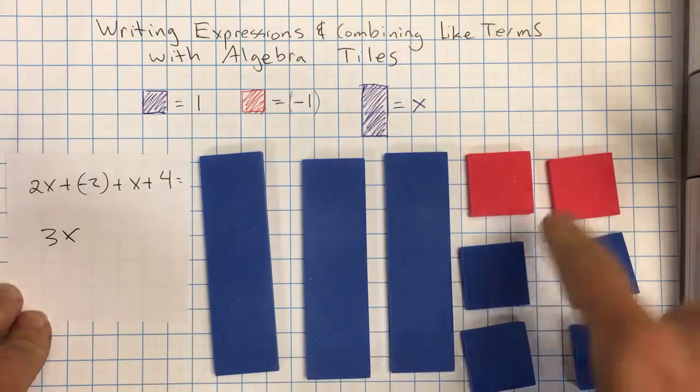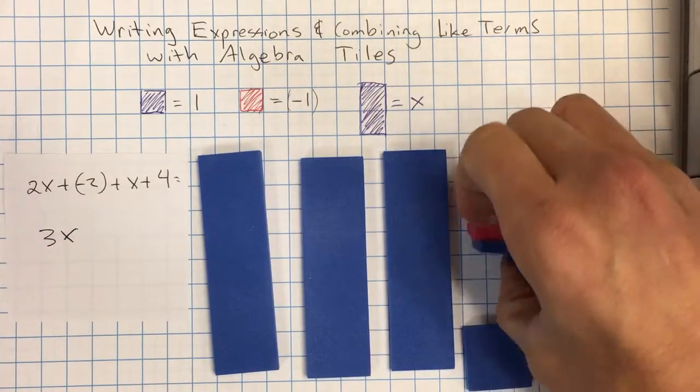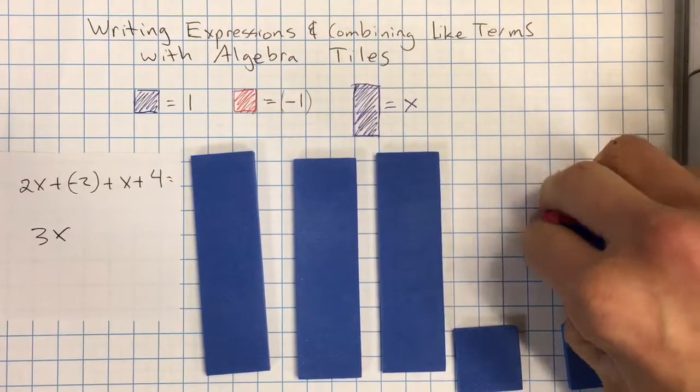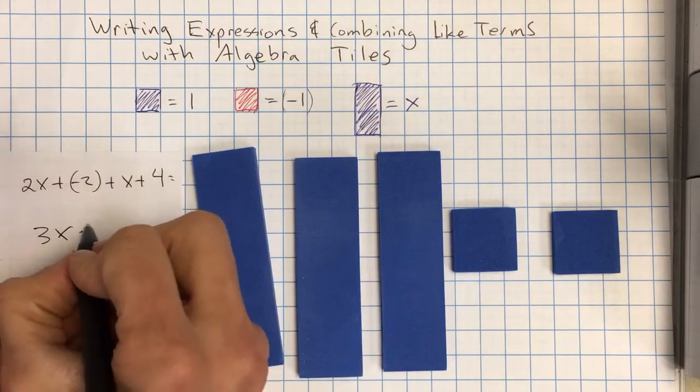And then for my numbers, I can do the math. So any pair that I see, again, this is equal to 0. So I can remove that. This pair is equal to 0. So I can remove that. And so I now have 3x plus 2.